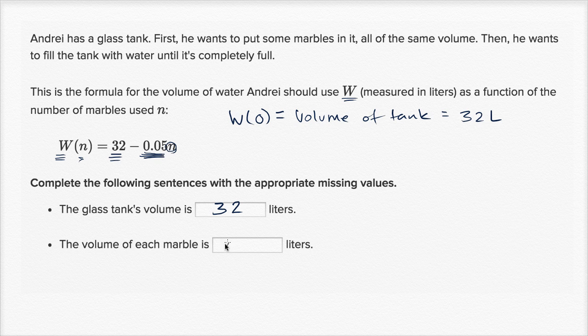So let's write that down, 0.05 liters. And you could test this assumption. If you said, look, if you had one marble, then you would have to put 0.05 less than 32 liters in. And why would that be the case? Well, that would mean because that one marble is taking up 0.05 liters. That's how much space it's taking up.